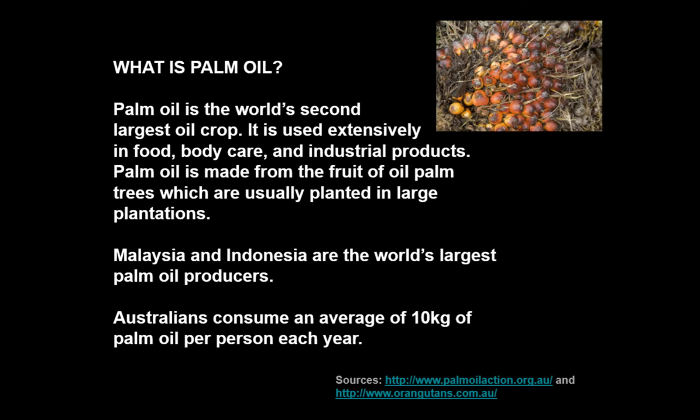What is palm oil? It's the world's second largest oil crop, used extensively in food, body care, and industrial products — a lot of soaps and foods contain it. It's particularly rich in oil and used for a whole range of products. Malaysia and Indonesia are the world's largest palm oil producers, and in Australia we consume about 10 kilograms of palm oil per person every year.